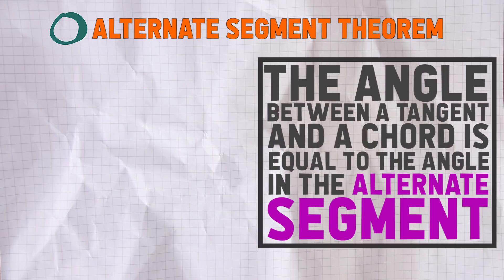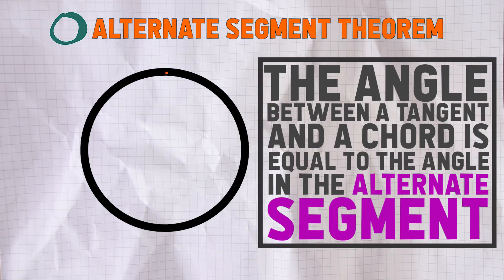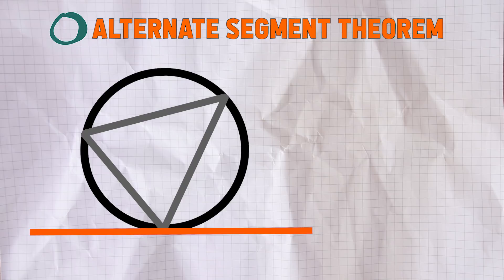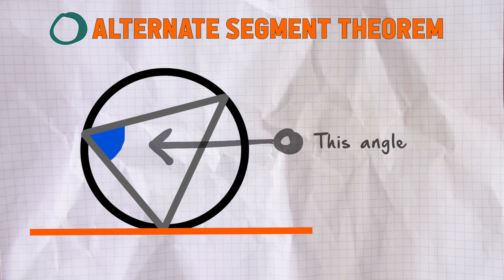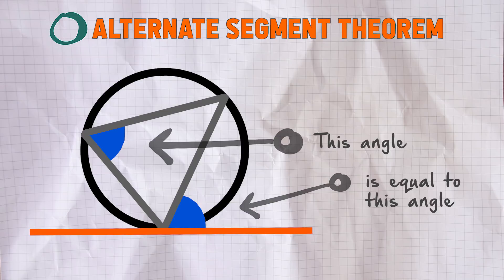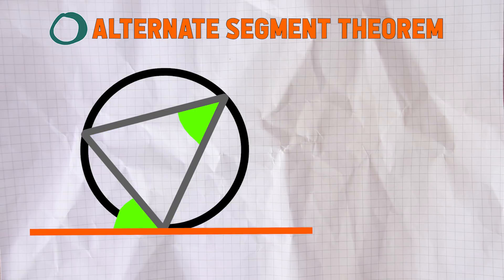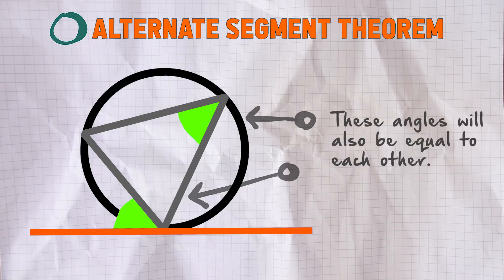Alternate segment theorem: the angle between a tangent and a chord is equal to the angle in the alternate segment. That's a bit of a mouthful, but it just means that this angle will be equal to this angle. I think of it as the angle inside the triangle is equal to the angle opposite and on the outside. So I think: inside, opposite, outside.